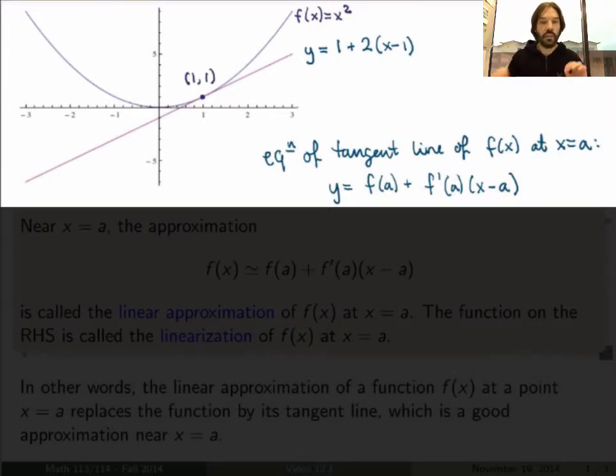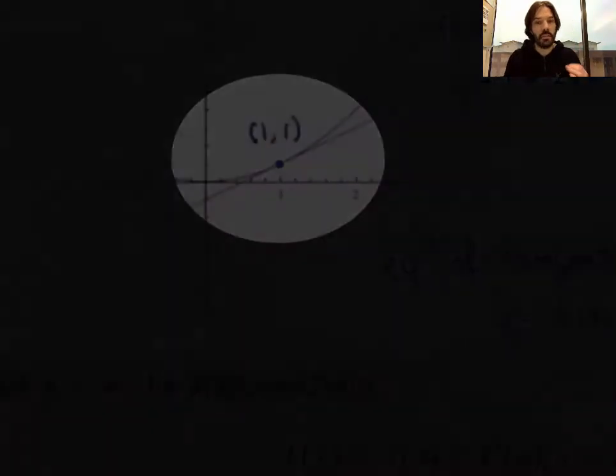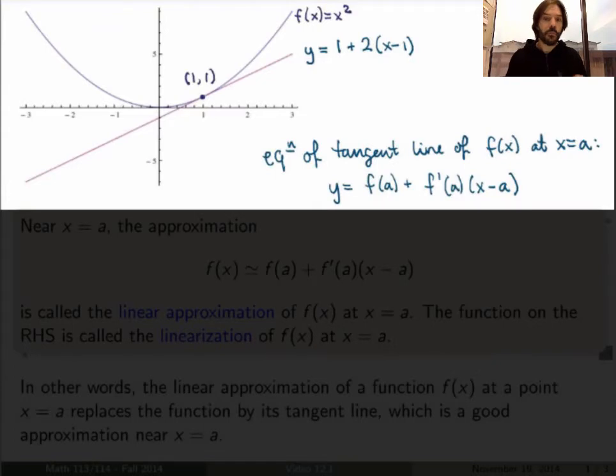Now the idea of linear approximations is very simple. It's just the idea that if you look at the function very close to the point x equals a, so if you zoom in and look very very close, then the tangent line becomes very very similar to the function itself. So in other words, we can approximate the function near this point as being given by the tangent line. Of course they're not the same, but the tangent line provides a good first approximation of the function.